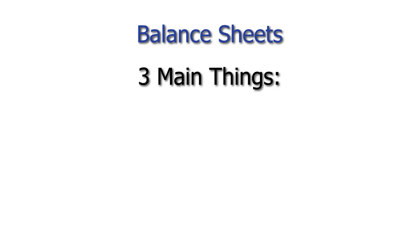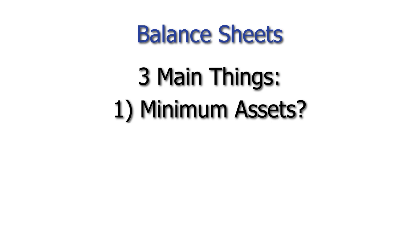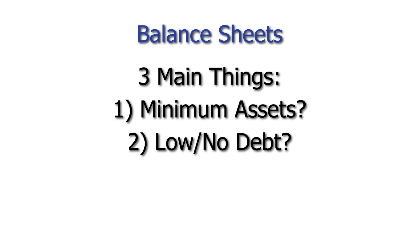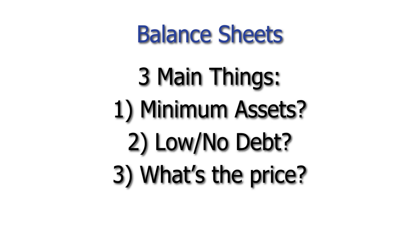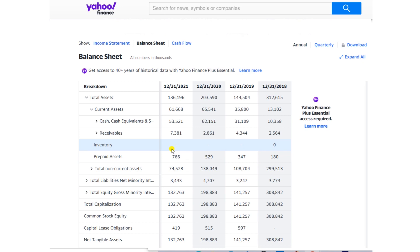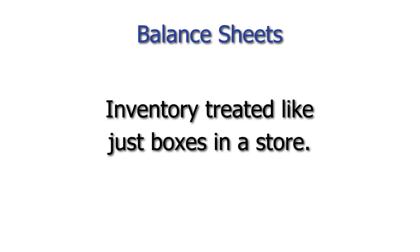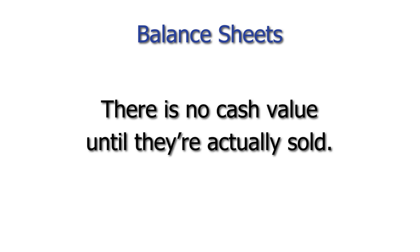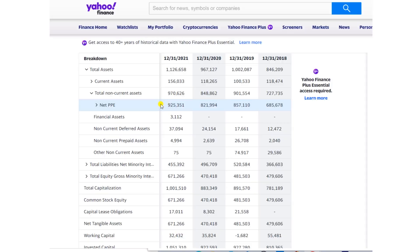When analyzing a company, I care about three main things: what are the minimum assets it has, does it have low or no debt, and what's the price for those assets. To gauge assets, I look at the current assets then minus the total liabilities. If inventory is listed, I will typically subtract about half from the value, because I treat inventory like it's just boxes sitting in a store — they have no cash value until they're actually sold.